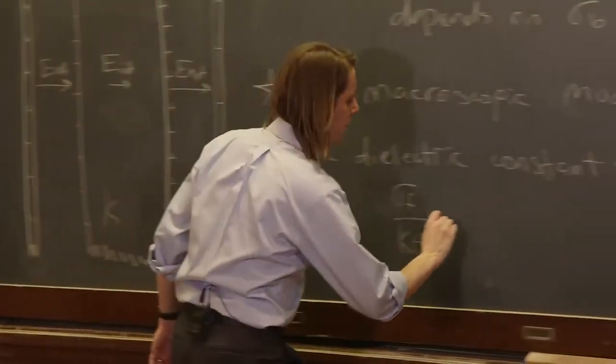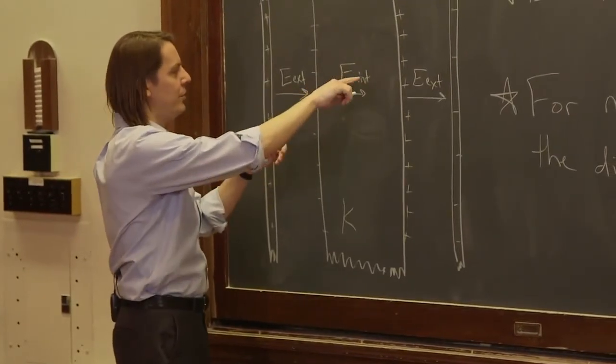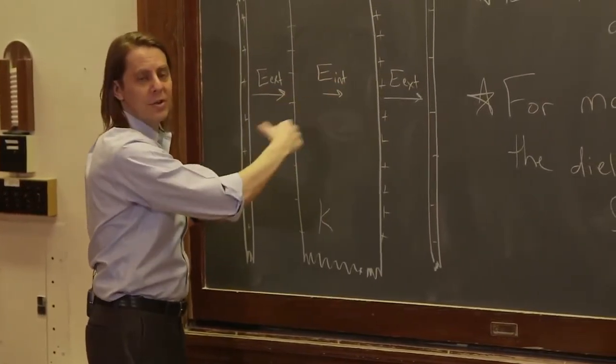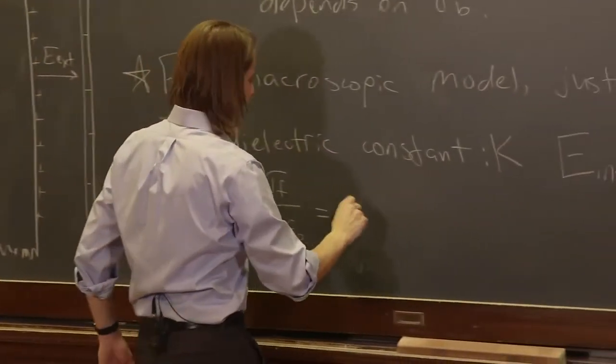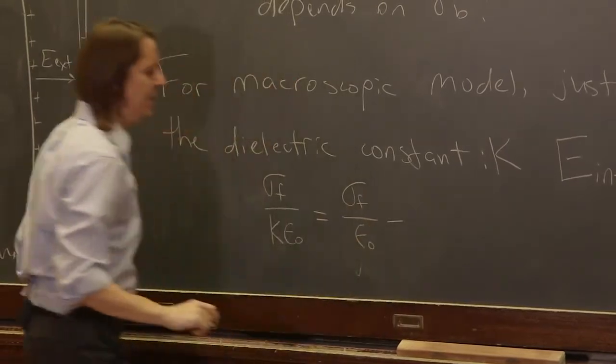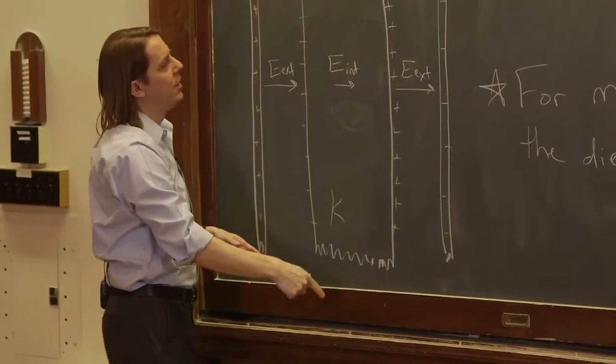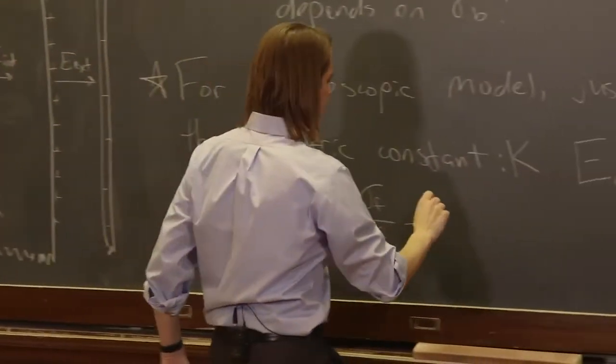That's equal to what? That's equal to the external field plus the field the polarization creates going back. So the external field, that's just sigma_free over epsilon_naught, and then we subtracted the field due to the bound charge, which was sigma_b over epsilon_naught.